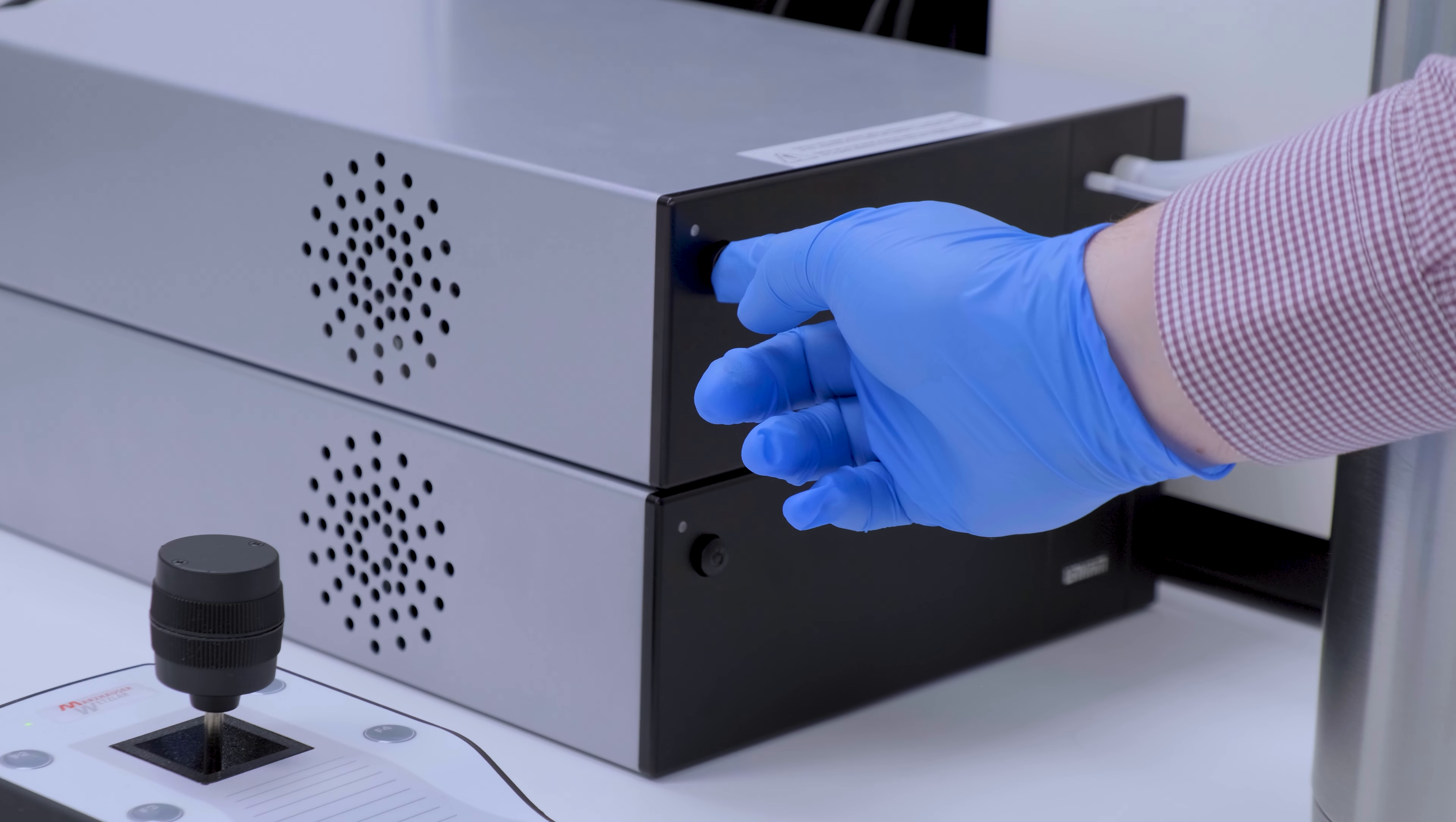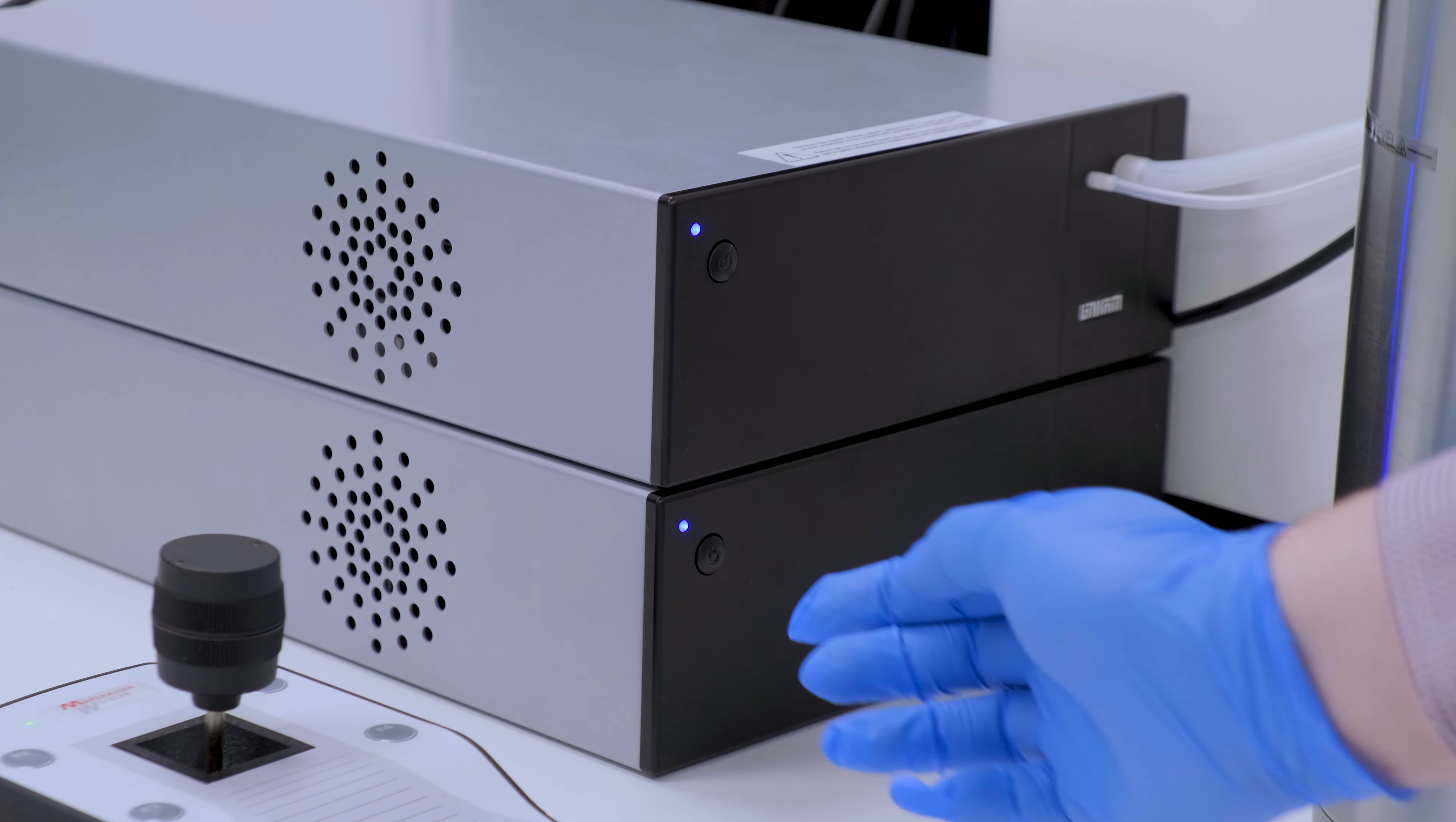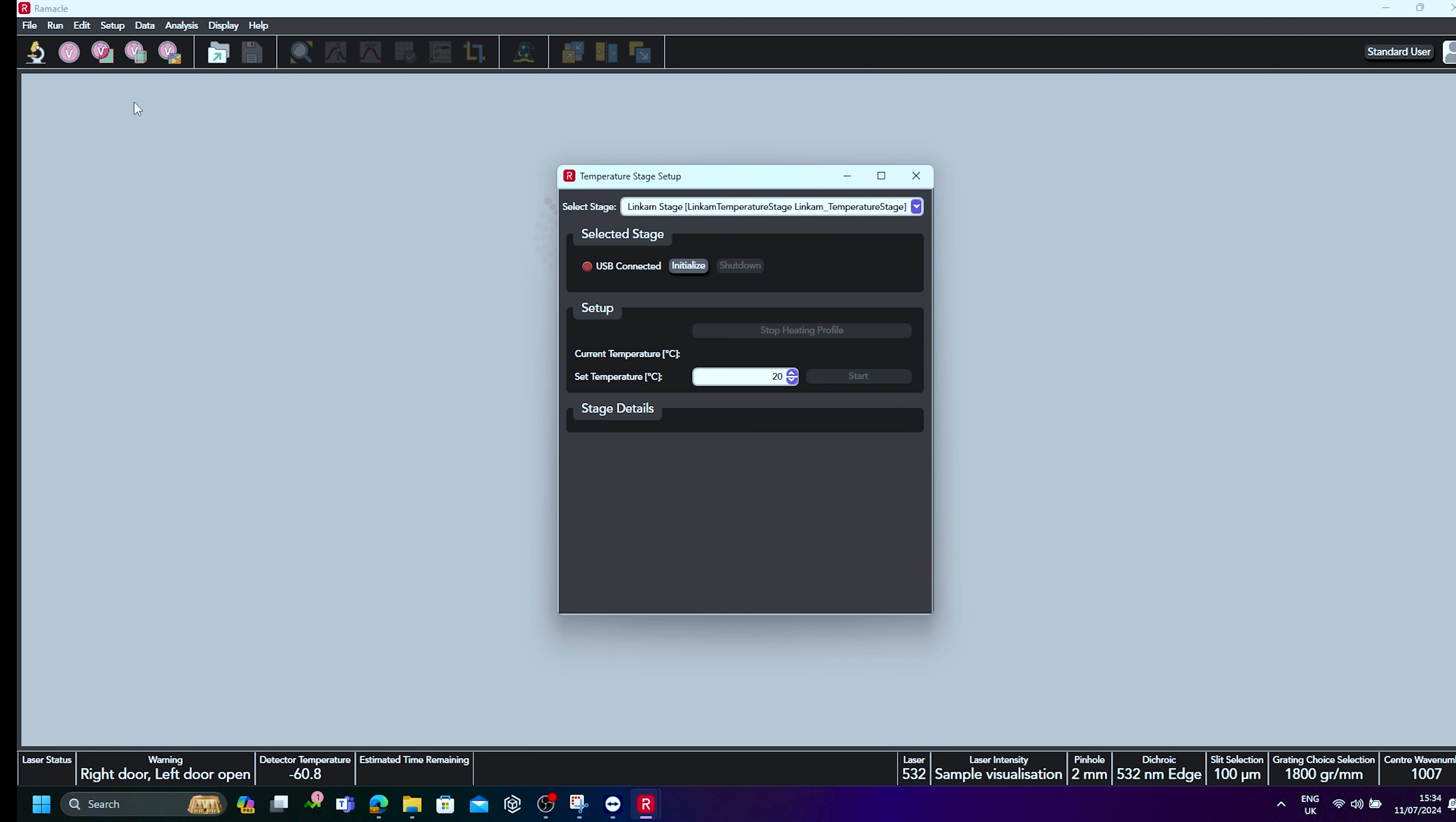Next, turn on the LNP96 followed by the T96. To initialize the temperature control system in Ramico, select Setup followed by Temperature Stage Configuration. Then click Initialize. You will now be able to change the temperature of the stage through Ramico.